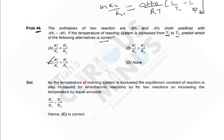Let's see what we have said here. As the temperature of the reacting system is increased, the equilibrium constant of the reaction is also increased for endothermic reactions. So for two reactions on increasing the temperature by equal amounts,